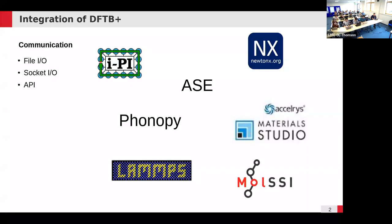DFTB+ has also been connected to GROMACS and CHARMM, so you can make QM/MM simulations. You can have molecular mechanics codes providing methods for a very large number of atoms very efficiently using molecular mechanics, and then for a few regions where it's important to get quantities using quantum mechanics, you can use DFTB+ and couple the two together.